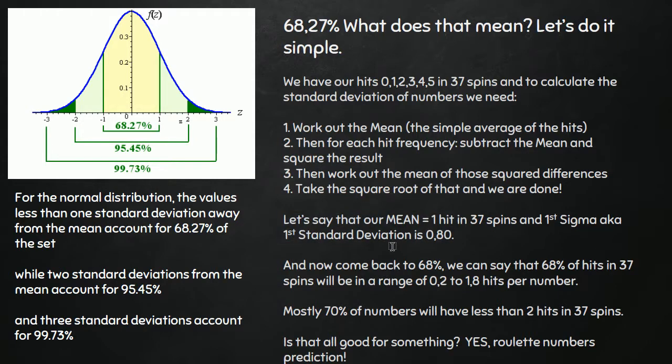So let's say our mean, like standard simple average which you calculated from hits in 37 spins. A hit is if one number, for example number 30 will hit, that's one hit and we are taking average of all of these hits and it's one, obviously.